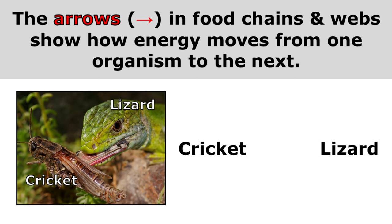The arrows in food chains and webs show how energy moves from one organism to the next. Here we see a cricket being eaten by a lizard, so I'll point my arrow from the cricket to the lizard. That's because the energy in the cricket is being transferred to the lizard, and the arrow shows the movement of energy.